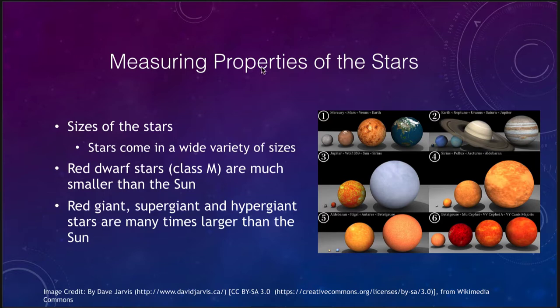Let's look at what we can determine by measuring some properties of a star. Stars come in a wide variety of sizes. Just looking at ordinary stars, typical stars can be much smaller than the sun. Here is Jupiter — we can have a very small star like Wolf 359, which is a small red dwarf star significantly smaller than the sun, in fact much closer in size to Jupiter than to the sun.